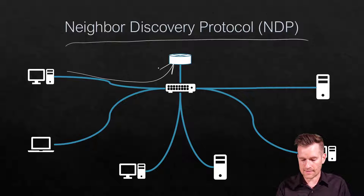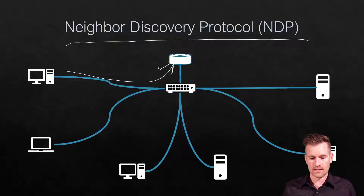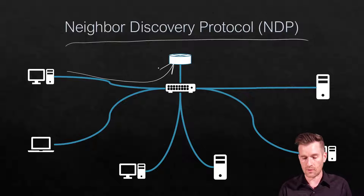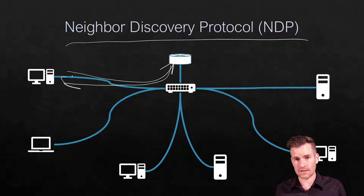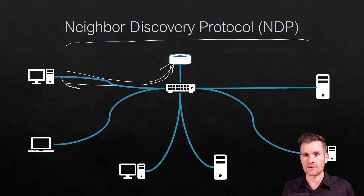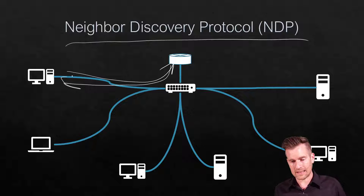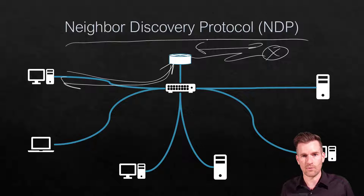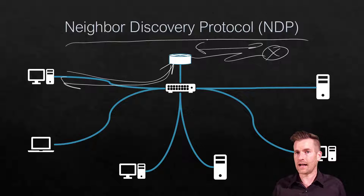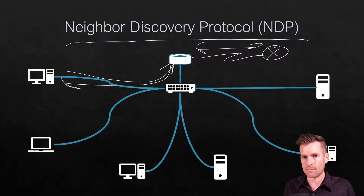Another thing we are able to do is find things like routers on the network. There's something called router solicitation to find the routers. And when we find routers, it also allows us to get information like the prefix information or the network information, so that we can create a global unicast address and send it out to the rest of the network. It also allows multiple routers connected together to communicate back and forth. So Neighbor Discovery Protocol allows a lot of this communication to happen, to establish connections between devices.